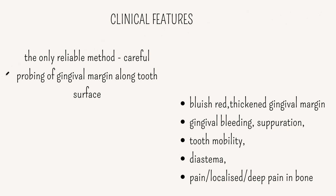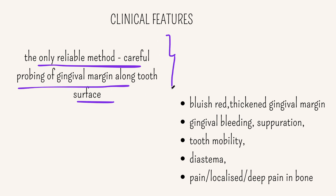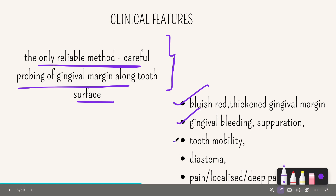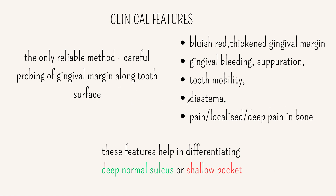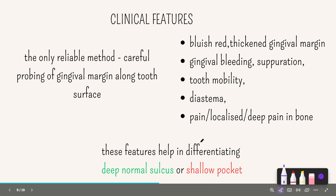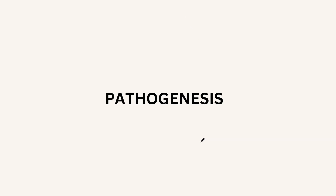The only reliable method to confirm a periodontal pocket is careful probing of the gingival margin along the tooth surface. Along with probing depth measurement, you can also look for bluish-red or thickened gingival margin, gingival bleeding, suppuration, tooth mobility, diastema, and pain which could be localized and deep. These features help differentiate a normally deep sulcus from a true pocket.